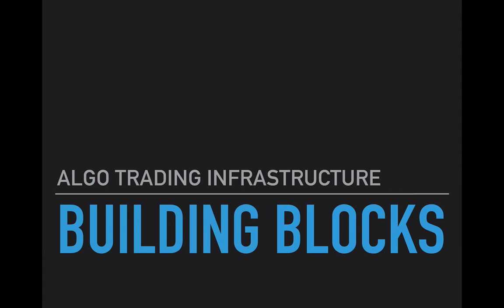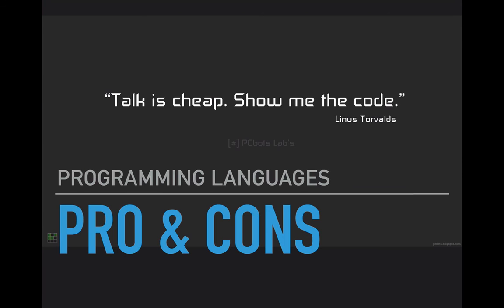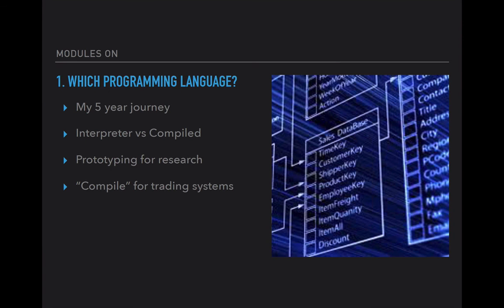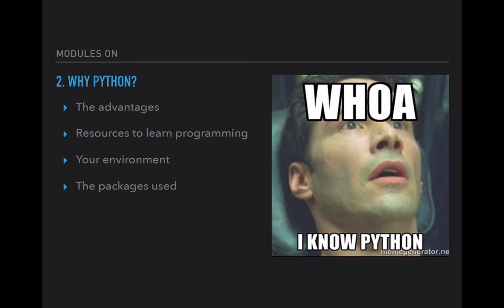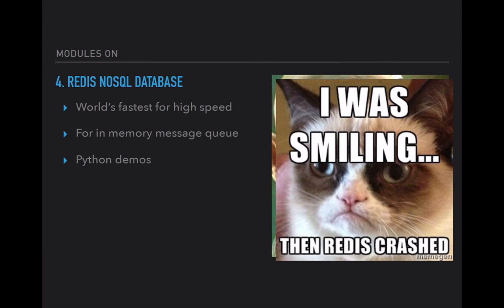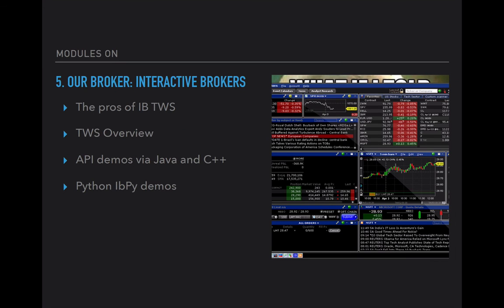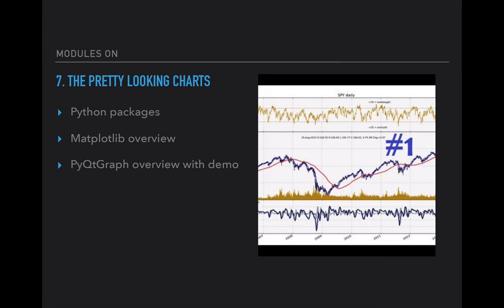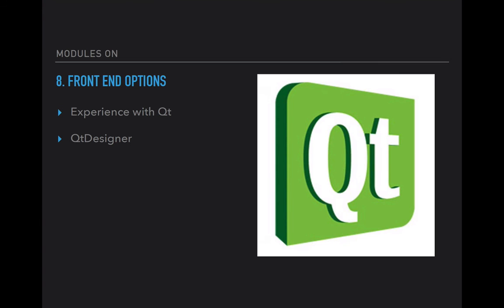Let me do a recap. Week one: which programming language. Week two: why Python, pros and cons, resources. Then we get into database technology, specifically NoSQL — MongoDB in week three, and Redis in week four. Week five: Interactive Brokers, our chosen broker. Week six: demos around Yahoo Finance, which is free. Then we get into charting using different Python packages, all open source and free, and we'll cover options using QT Designer to design some pretty cool-looking front-ends.